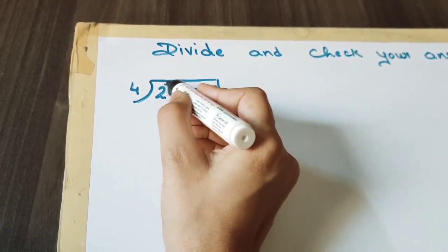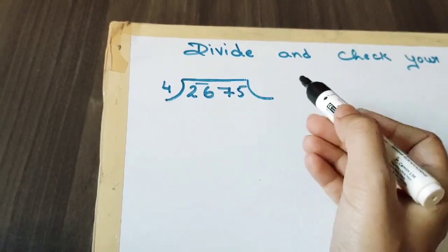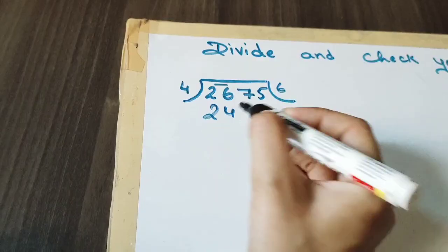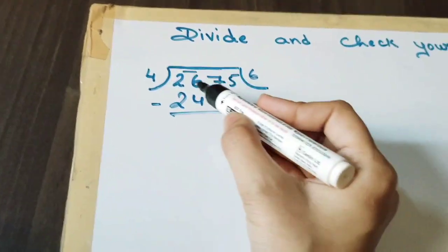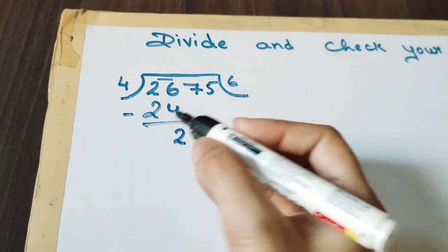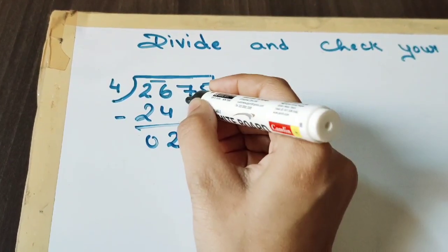2 is not divisible, so we will take two numbers together. So 4 times 6 is 24. Now we will subtract: 6 minus 4 is 2, now 2 minus 2 is 0.